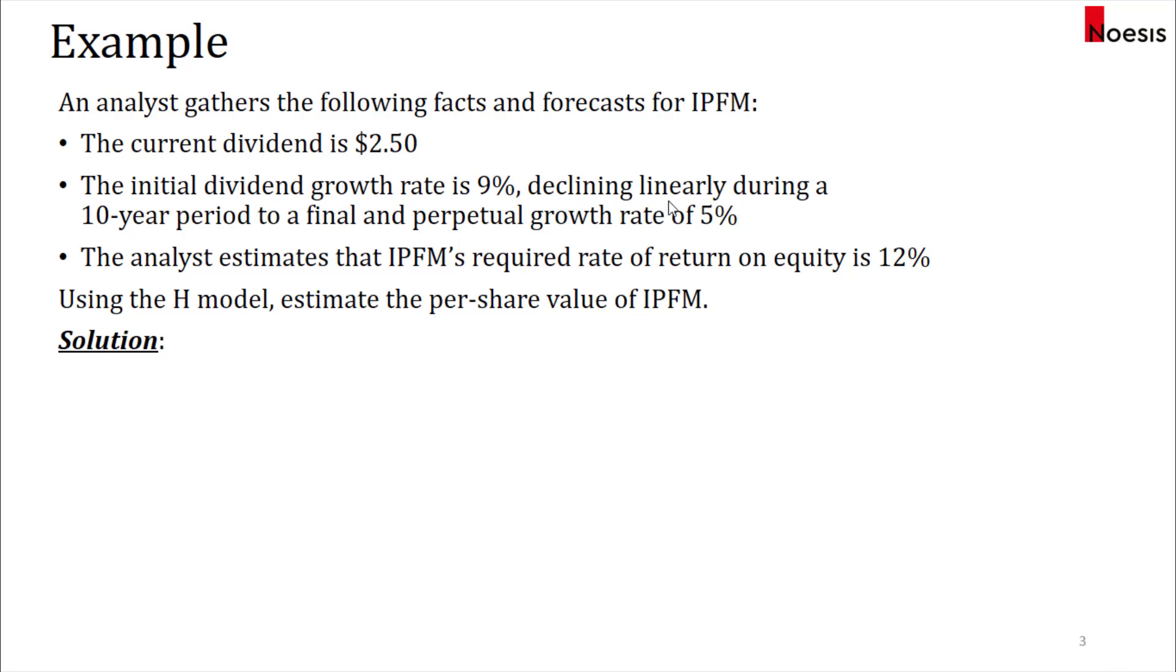The keyword here is that the dividend growth rate declines linearly, hence we will be using the H model. And of course the formula for H model is this, to find the value per share.